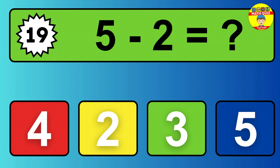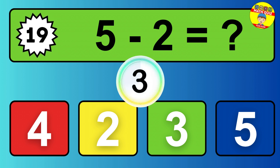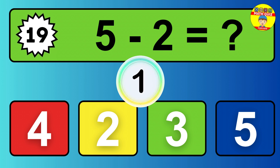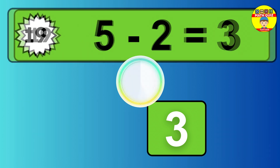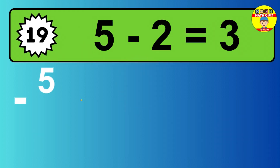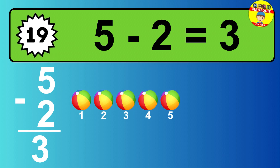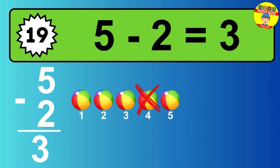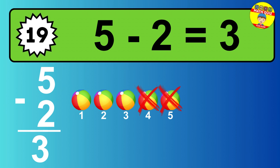Question nineteen. Five minus two equals what? So the answer is, five minus two is three. Let's count it. One, two, three.